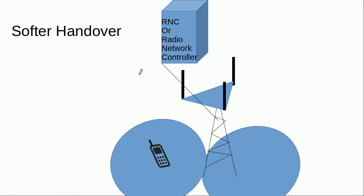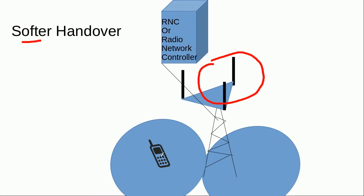Now we come to a type of soft handover known as the softer handover. Softer handover is between the sectors of the same cell. For example, this is a cell divided into three sectors: one antenna covers one sector, another antenna serves the second sector, and the third antenna serves the third sector. So when this mobile moves from one sector to another sector, it can be in the state of softer handover between these two sectors, and the rest of the procedure is the same as we discussed for soft handover.